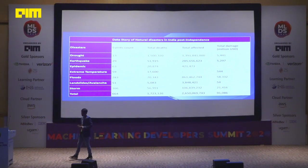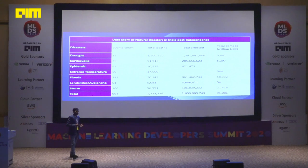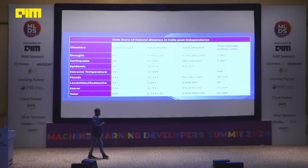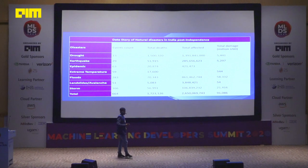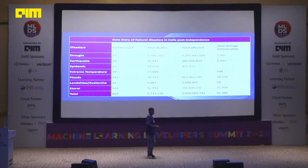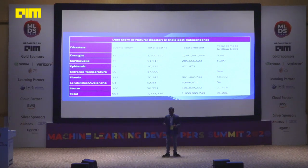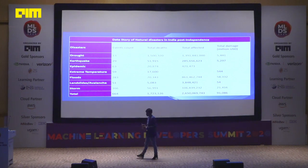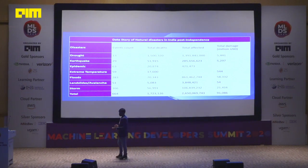There are 664 disasters that happened in India from post-independence in 1947 until now, causing deaths totaling more than 17 lakh people — a devastating figure — and the total damage is over 91,086 million USD. These kinds of losses impact not only the economy but also the sentiments of the people.